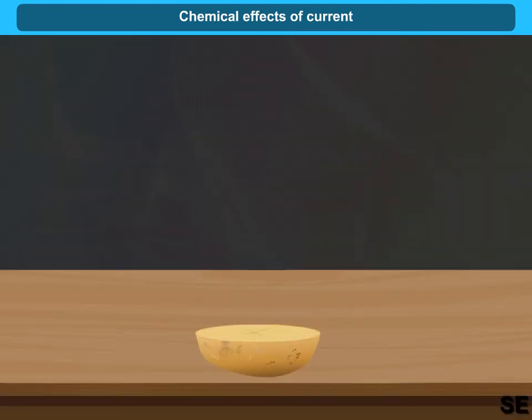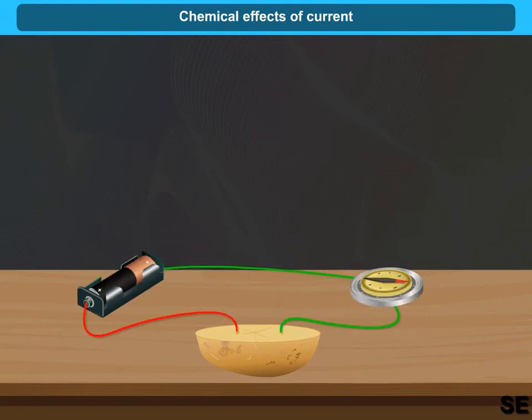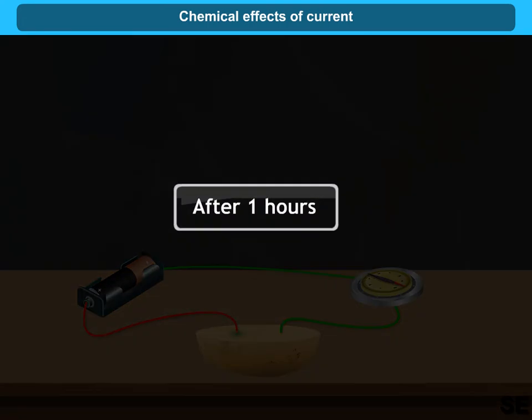Take a potato. Cut it into two halves. Take a tester having magnetic compass. Insert free ends of the tester in the potato. Observe the setup after one hour.